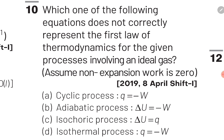For option B, an adiabatic process: in an adiabatic process there is no heat absorbed or released, so Q = 0. The first law becomes ΔU = 0 + W, hence ΔU = W. However, option B gives ΔU = −W, which is a wrong representation of the first law of thermodynamics.